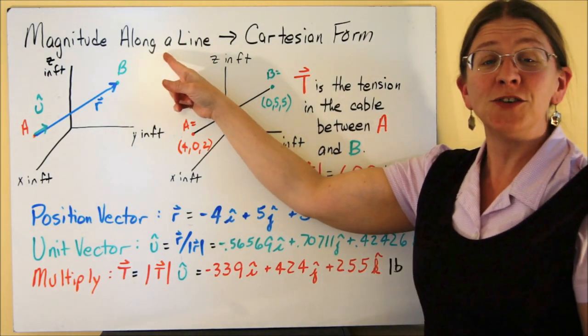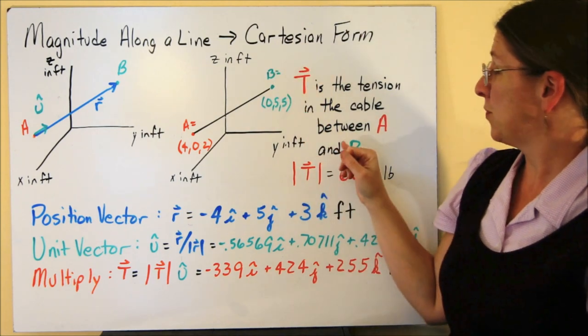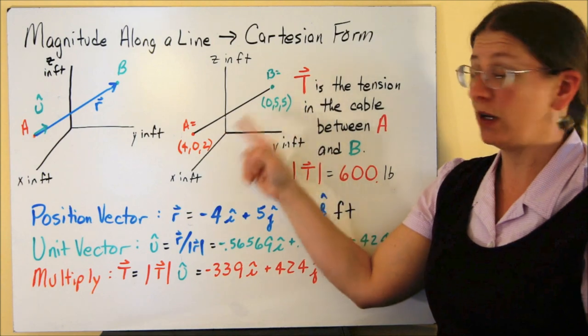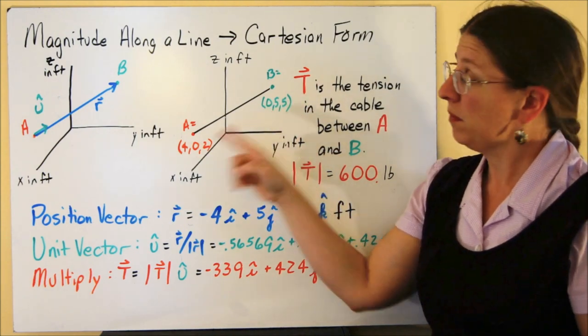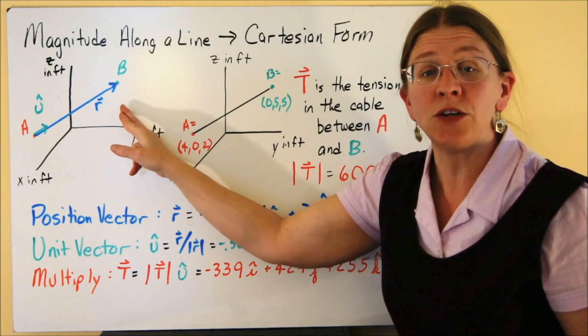To find a magnitude along the line in Cartesian form, let's pretend that I have this T. T is the tension in some cable that goes from A to B. So I have my position vector goes all the way from A to B. That's in units of feet.